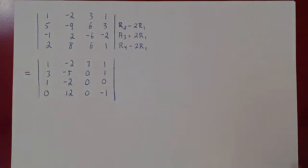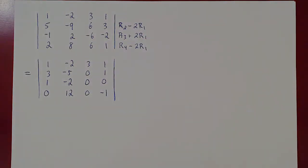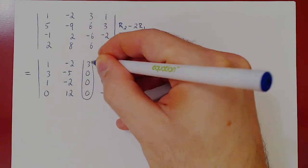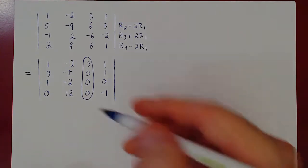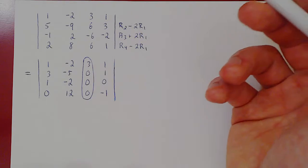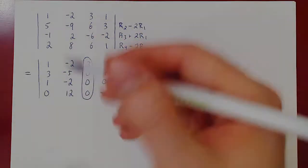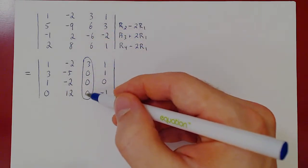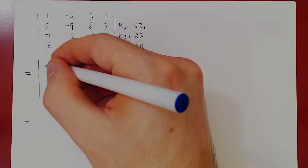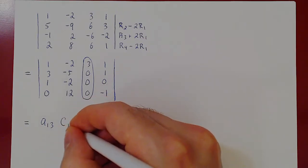We have introduced 3 zeros in the third column, so now we use cofactor expansion along the third column because it has the most zeros. We don't have to bother with C2,3, C3,3, or C4,3 because each is multiplied by 0 and gets killed. So all we have is a1,3 times C1,3.